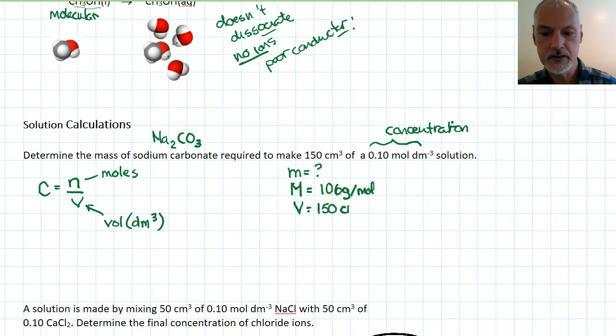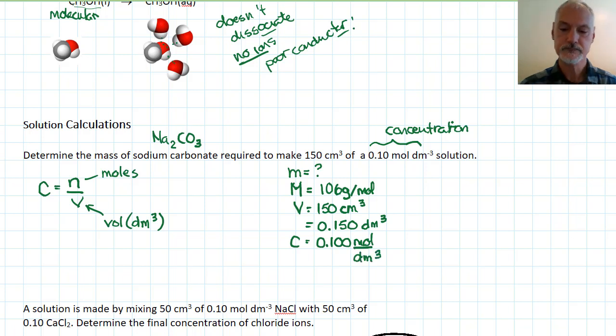I'm given the volume of my solution, 150 centimeters cubed, which I'm going to convert right away into decimeters. And I'm given the concentration of my solution. Now this deviates a little bit from given information that I have here, but what I'm going to do is make a little adjustment to this formula.